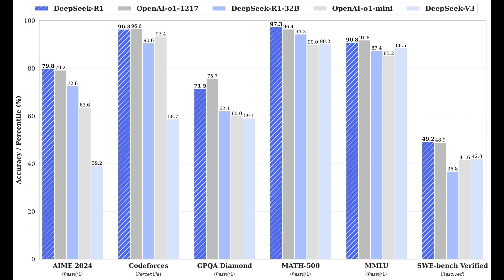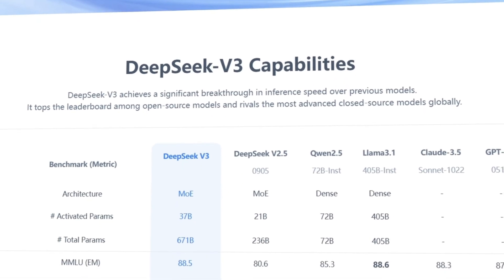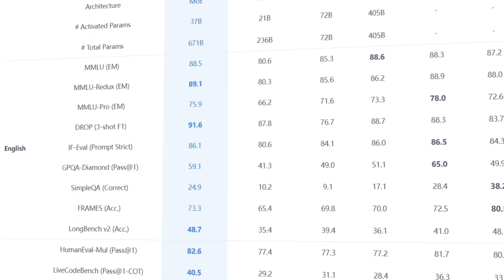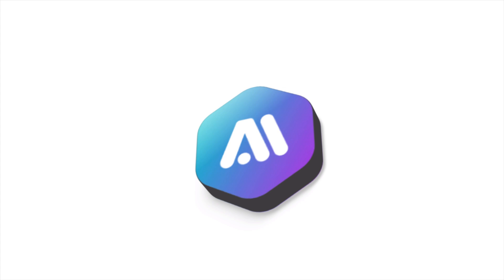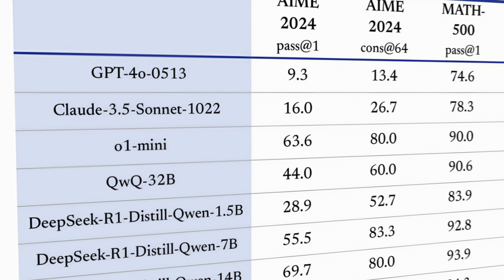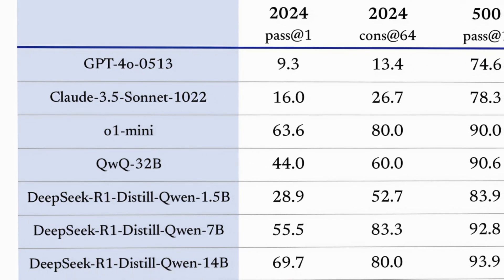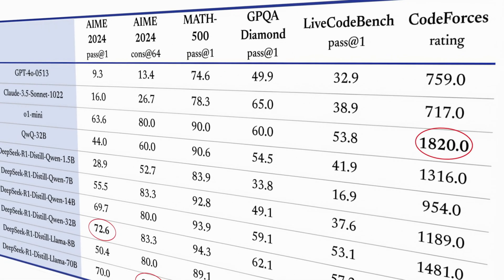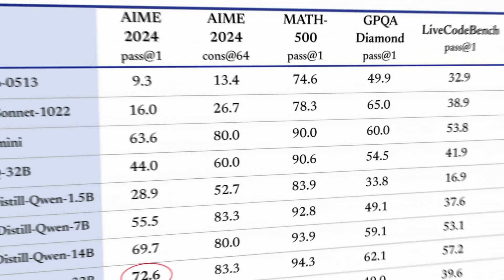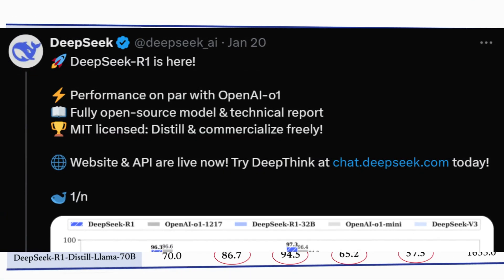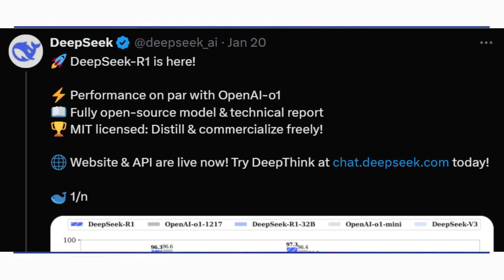These results are absolutely incredible for a fully open-source model. DeepSeek AI has done a phenomenal job making this technology accessible and free for everyone. When compared to the latest models like Claude and GPT-4o, DeepSeek R1 outperforms them in almost every benchmark, except Codeforces for O1, which focuses on coding. According to a recent blog post by DeepSeek, the model's performance rivals OpenAI's O1 while being free to use and distribute for any purpose, including commercial applications.